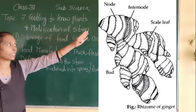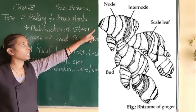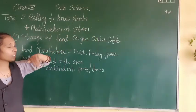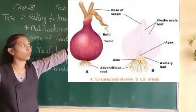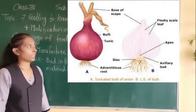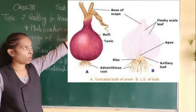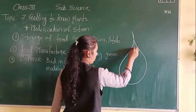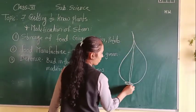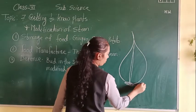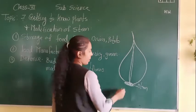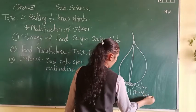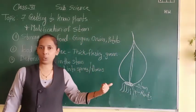In the image you can see ginger - it has scaly leaves and nodes on it. Now let us discuss onion. I will draw a diagram of the onion. This is the structure of the onion. At the base of the onion you can see a white portion - that is the stem of the onion. Like this, roots are also visible - these are fibrous roots.